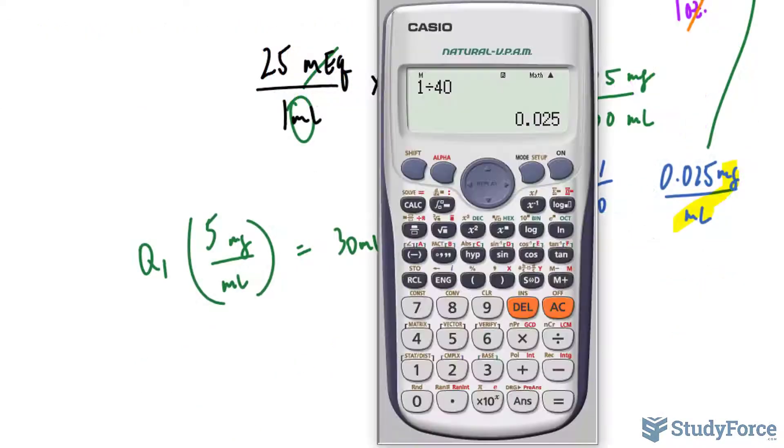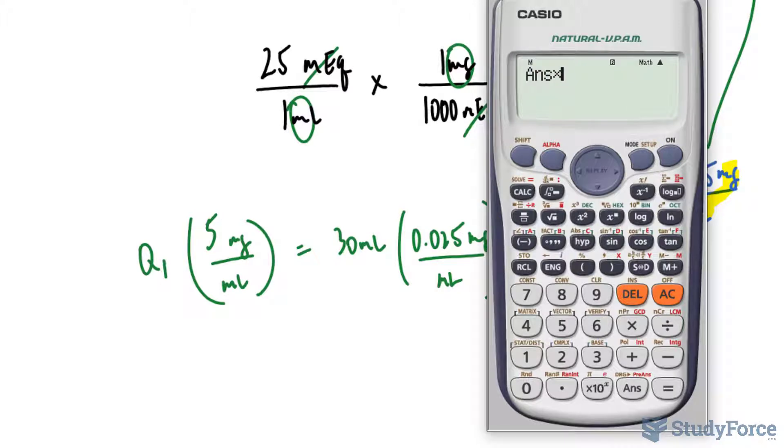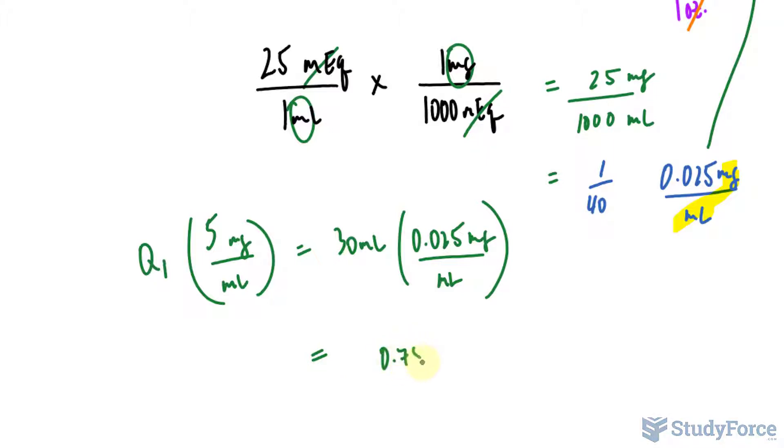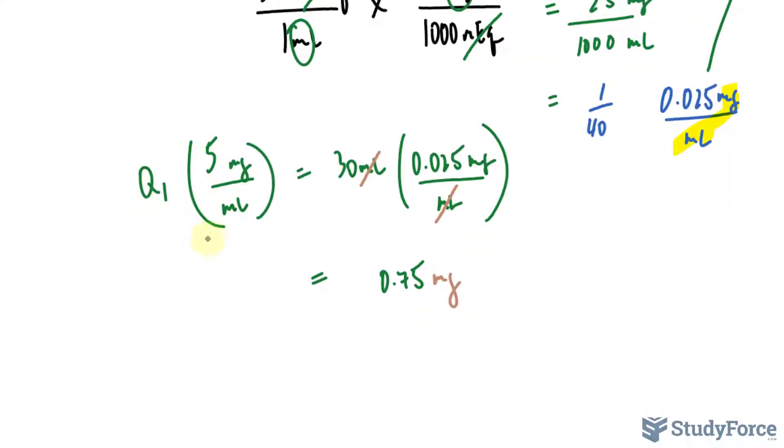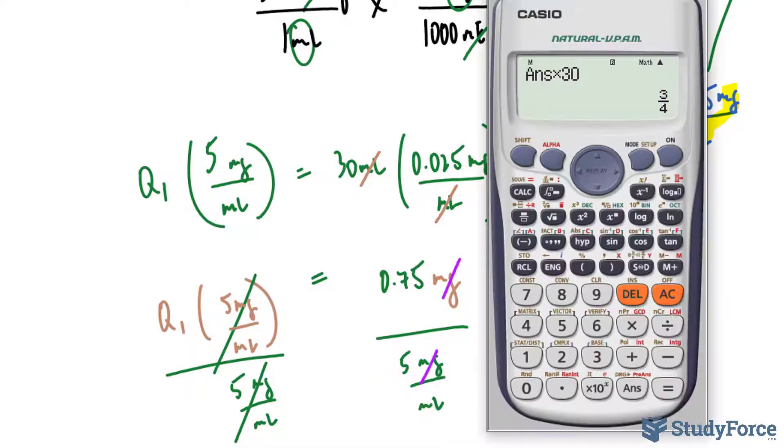All right, so using our calculator, the value on our screen times 30, that's the right side of the equation. 3 over 4 is equivalent to 0.75. And notice how the units cancel out, so you can write this down as milligrams. And on the left side we still have the same expression. To isolate for Q1, we divide both sides by 5 milligrams per milliliter. That and that cancel out, then these units cancel out. And we take the value on our screen, that's 0.75, and we divide it by 5, which gives us 0.15 milliliters.